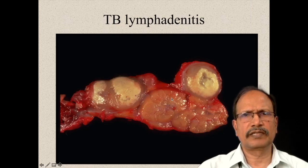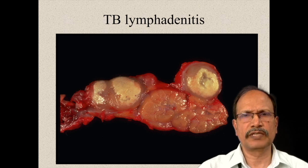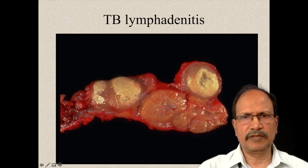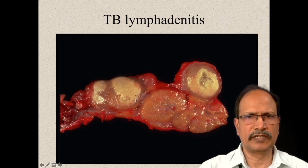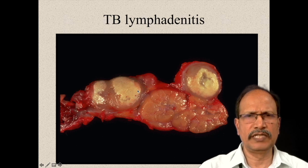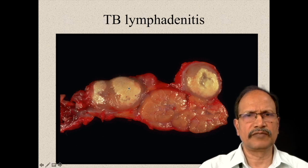This is the cross-section of multiple lymph nodes involved in tuberculosis. Each lymph node is distinct but they are attached to each other — this is called matting of lymph nodes. Some of these lymph nodes show yellowish discoloration at the center, which is caseous necrosis, also called cheesy or cheese-like appearance of the necrotic material. This is very typically seen in tuberculosis infection.